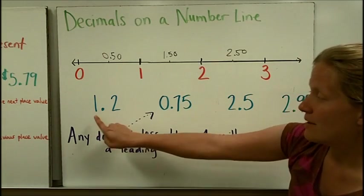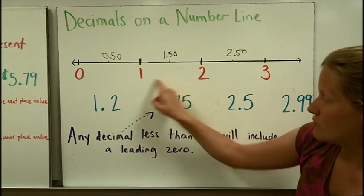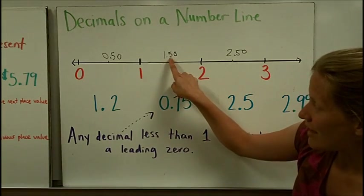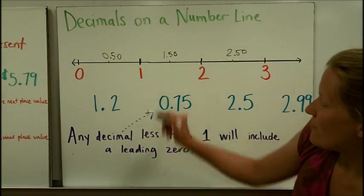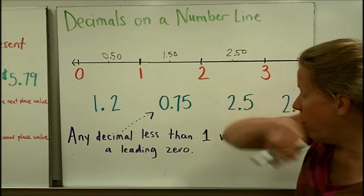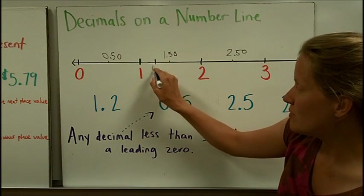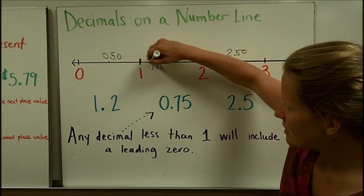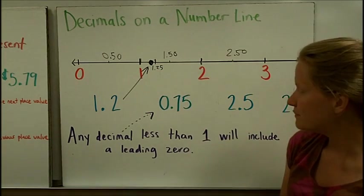Let's try placing these decimals on the number line. One and two tenths. Immediately this should tell me it's bigger than one, so it's going to be somewhere between one and two. And then this is five tenths, this is two tenths, so it's going to be less. If I were to think about halfway between a dollar and a dollar fifty, this would be a dollar twenty-five. So one and two tenths is going to be a little bit less than that, maybe right there. I'll just draw an arrow.